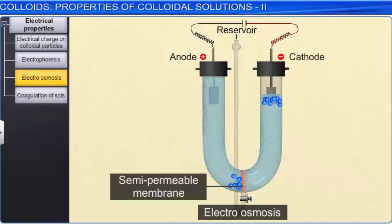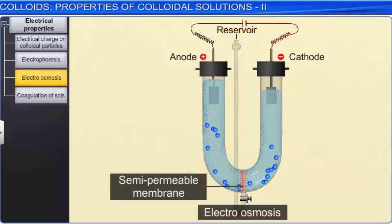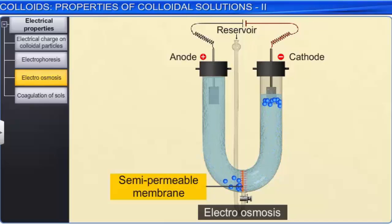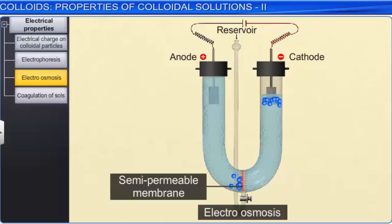Under the influence of an electrical field, the colloidal particles and the dispersion medium both have a tendency to move towards the oppositely charged electrodes. But the semi-permeable membrane does not allow the passage of the colloidal particles. The dispersion medium, however, can pass through the membrane and therefore its movement takes place.